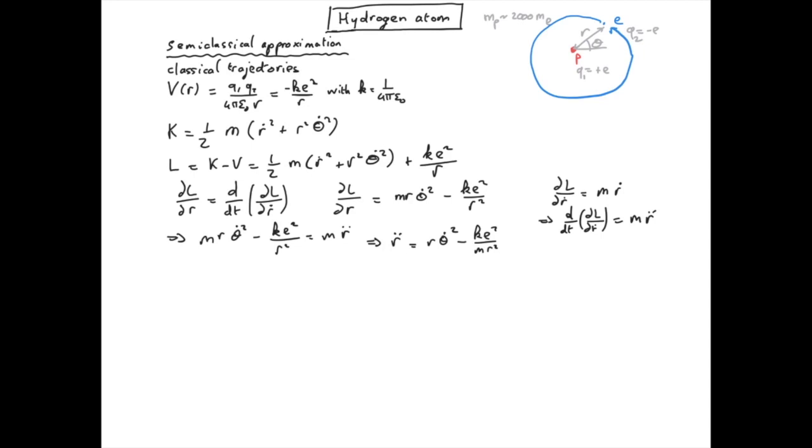If we consider for simplicity a circular orbit of the electron then r dot dot is zero because r is a constant. Because r is constant for a circular orbit, r dot is zero and therefore the kinetic energy simply reads.